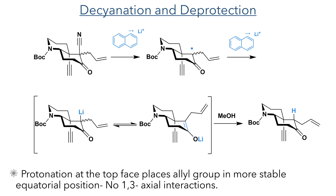The authors now turned their attention to removing the cyano group. To this end, they used lithium naphthalamide, which can act as a radical reducing agent. Successive radical reductions remove the cyano group from the molecule and generate a lithium enolate. The formation of the enolate is reversible, and this allows for the equatorial product to be formed, which is more stable as it does not suffer from 1,3-diaxial interactions.